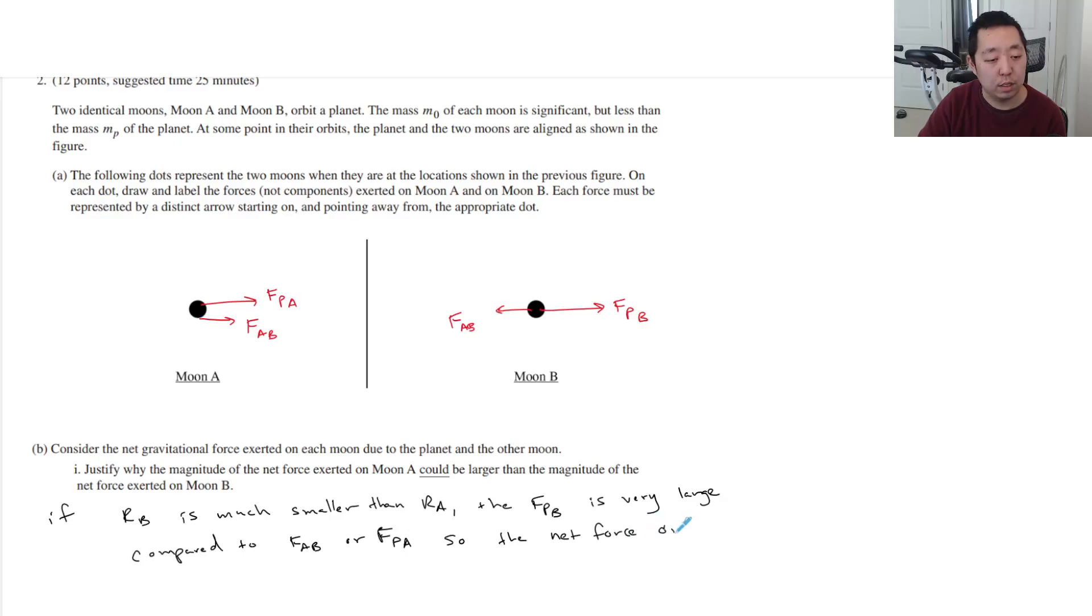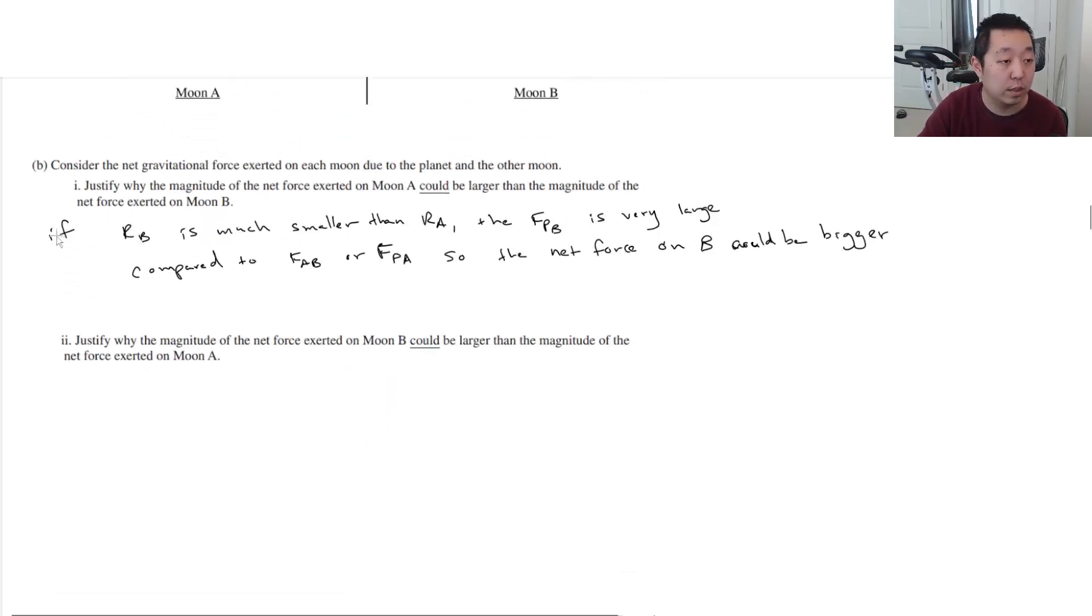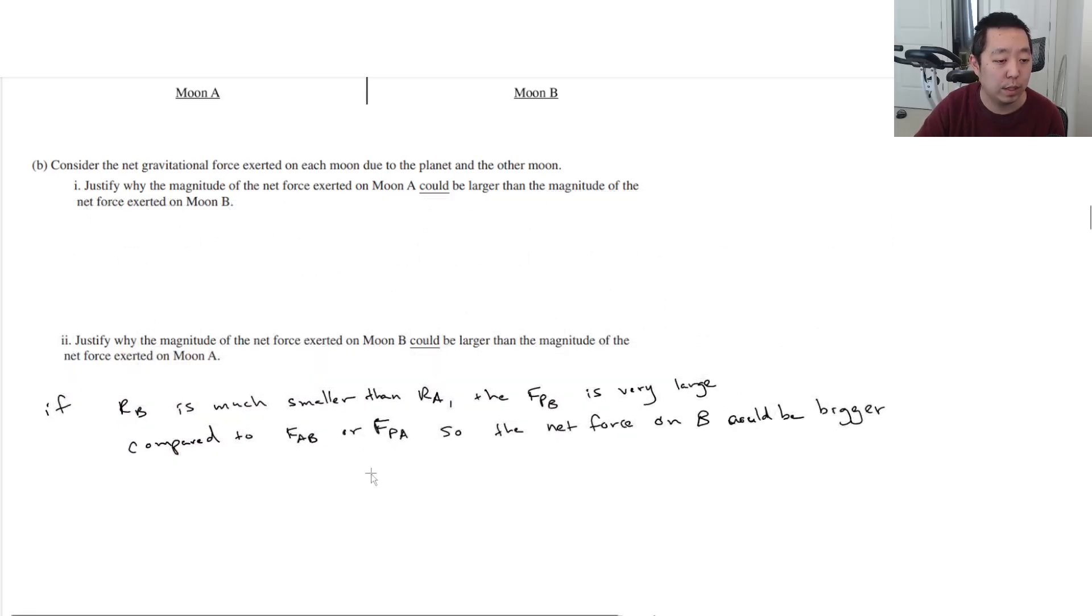Oh, whoops. I'm doing this backwards. This is B could be bigger, would be bigger. Oh, they're asking about why moon A could be bigger. Oh yeah, yeah, yeah. So the second part of the question, they actually ask you both ways. Why could moon A be bigger? Why could moon B be bigger? So that's where the force on moon B could be bigger.